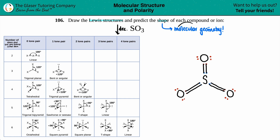Now that we have the Lewis structure, we can find the molecular geometry. The molecular geometry always comes from the central atom. To use this chart, the two things you need to know are the total number of atoms and the lone pairs around the central atom.